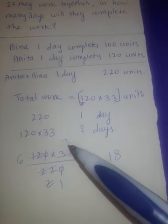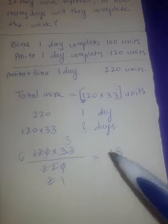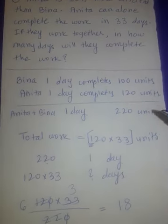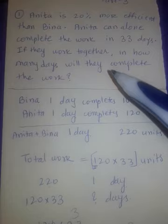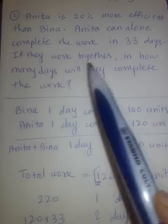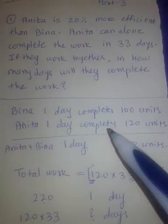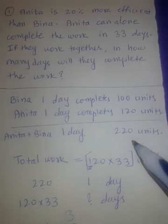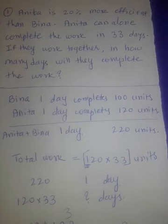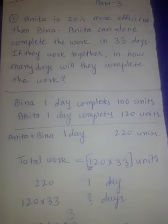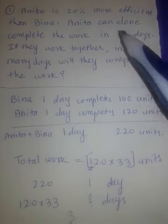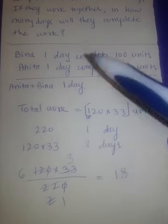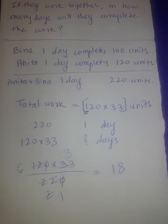One advantage of Time and Work problems is that the numbers are always very easy — for finding factors, cutting zeros, taking products, or finding LCM. The only thing is you should understand the approach: what is given and how to tackle the question. First we found how much they finish in one day together, then used the total units to find total days. These sums are very easy — just read twice and you will understand. Let's solve some more.